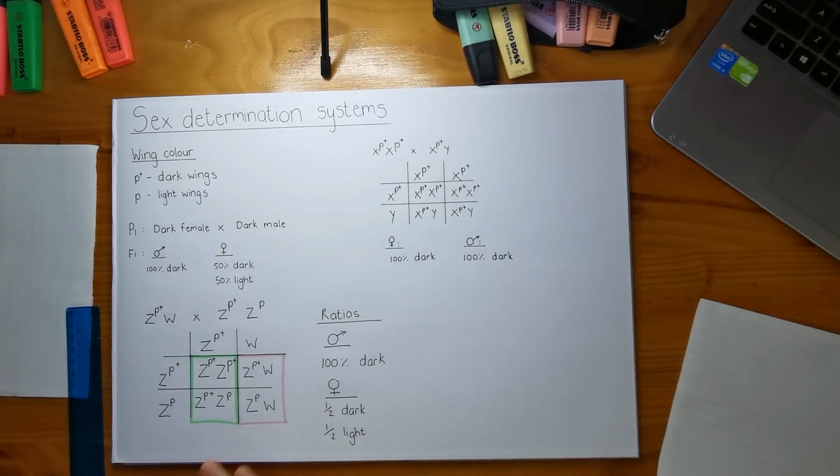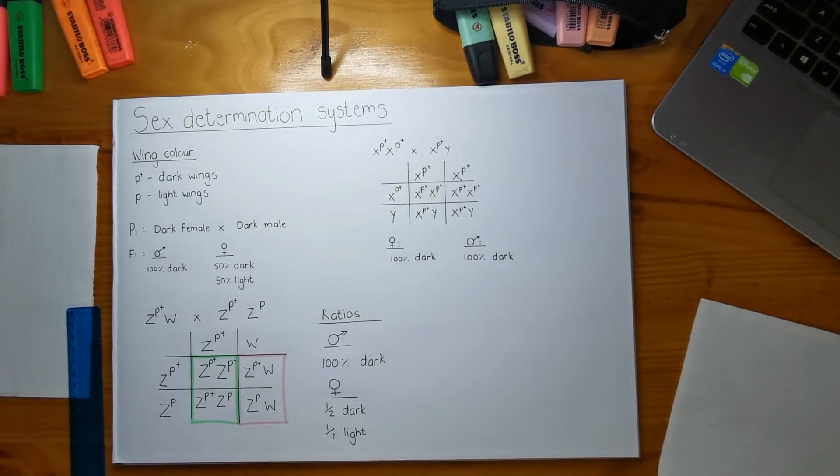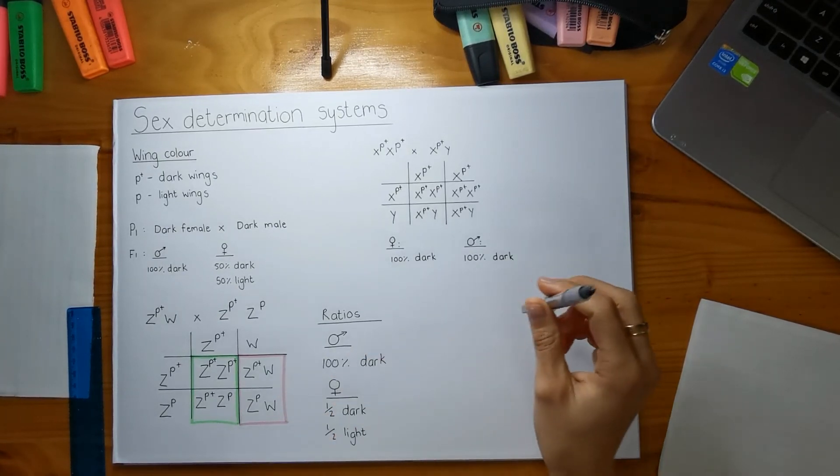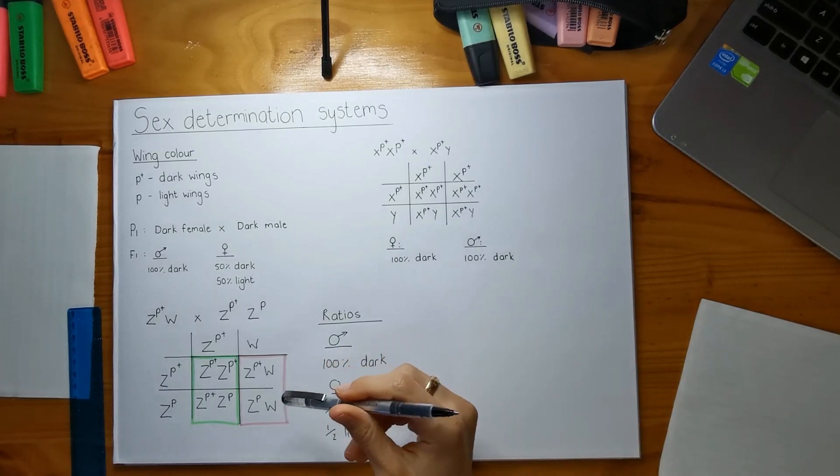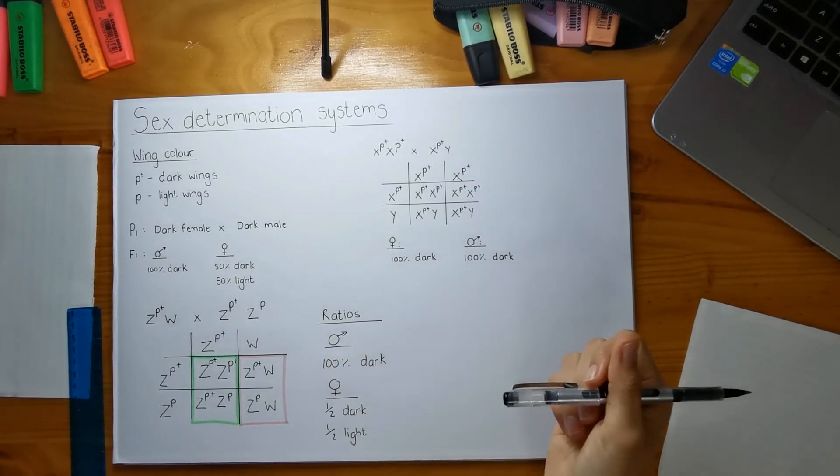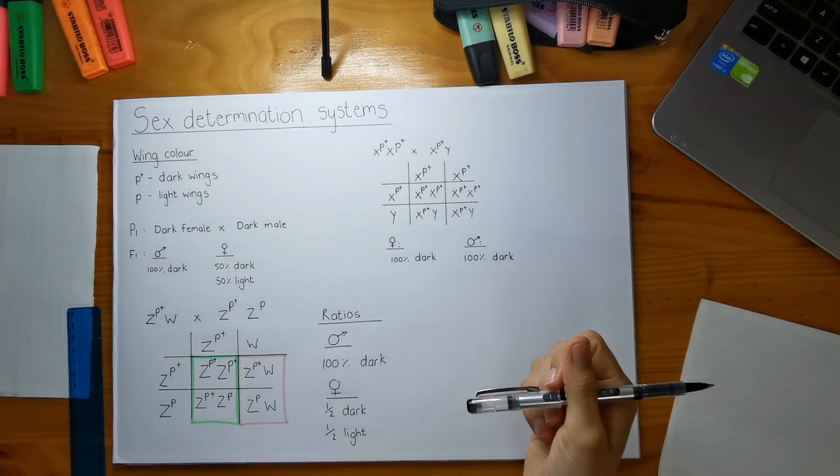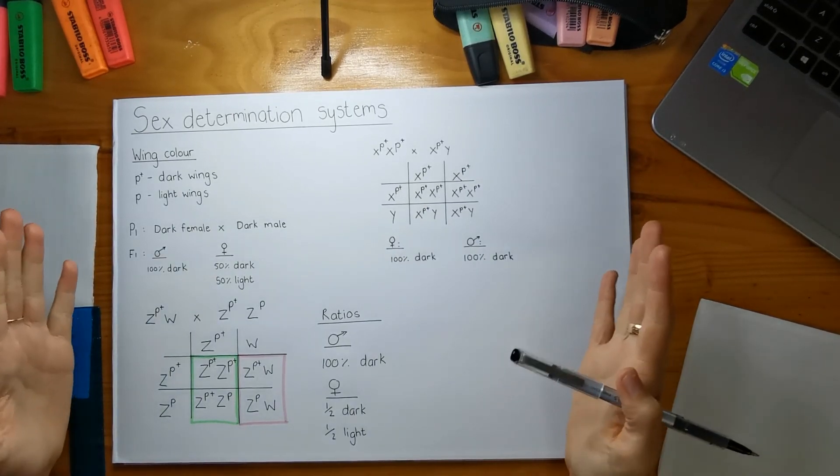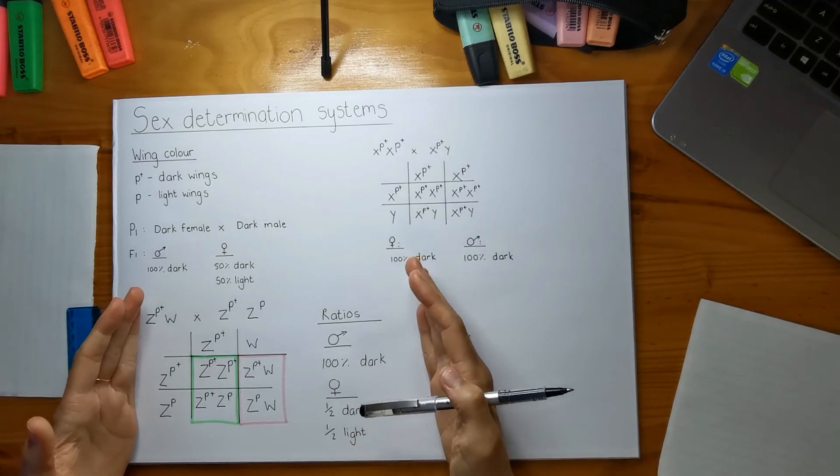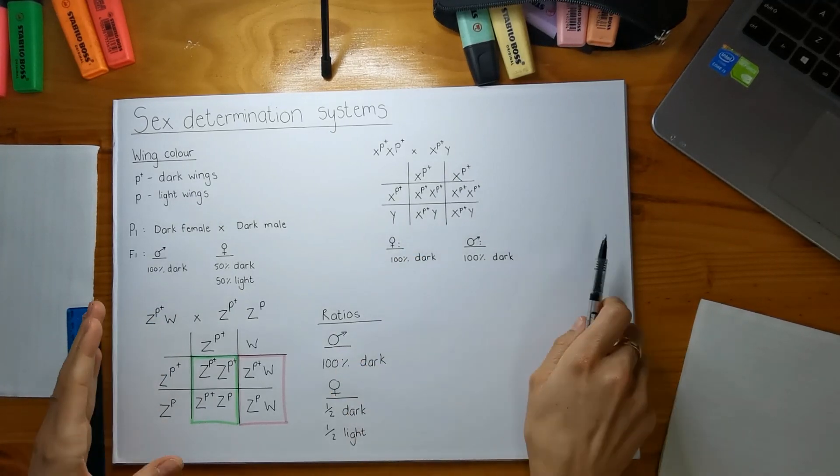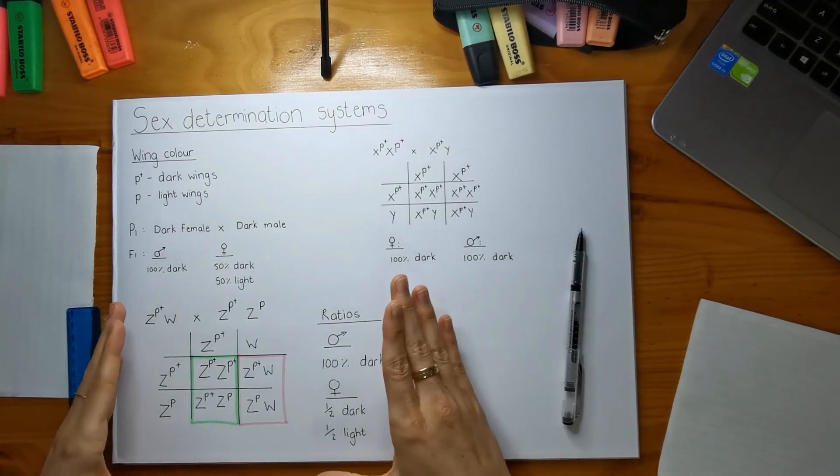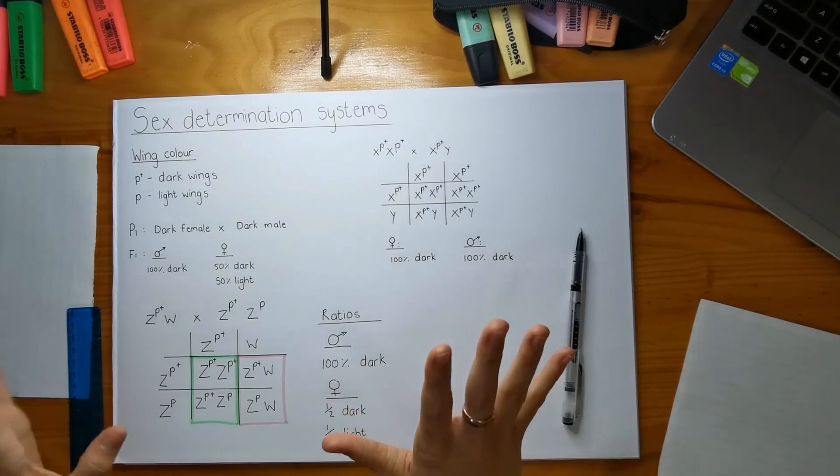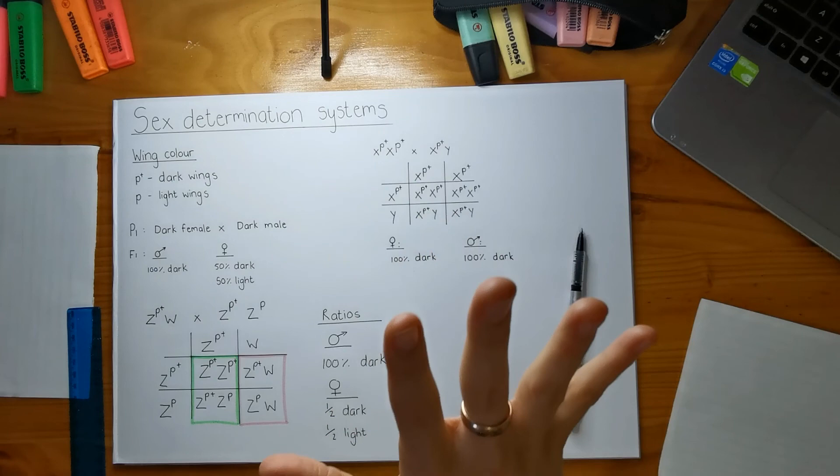It is important to know what animals fall into the ZW/ZZ system, and it's important to know how to spot it. So in a question, if they talk about a specific animal, make sure that you definitely pick up on what type of animal they're talking about, and that the sexes are swapped around.